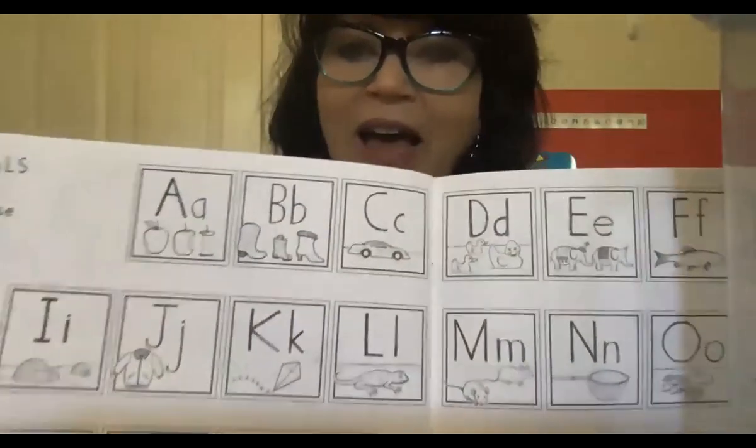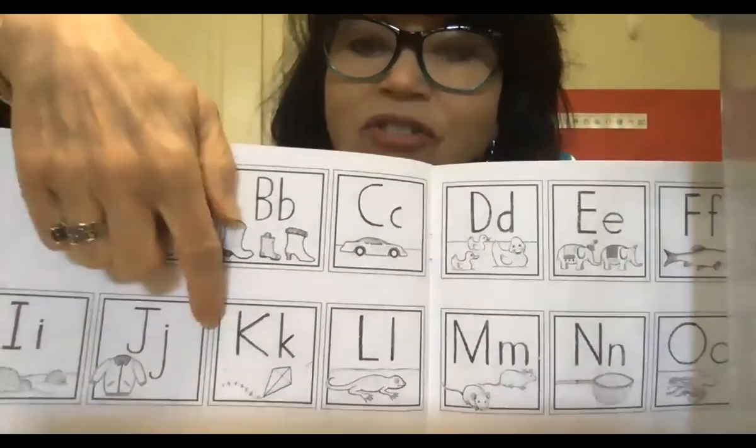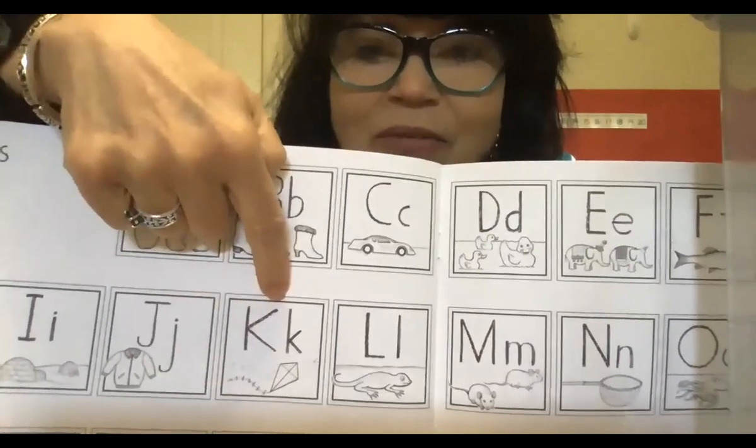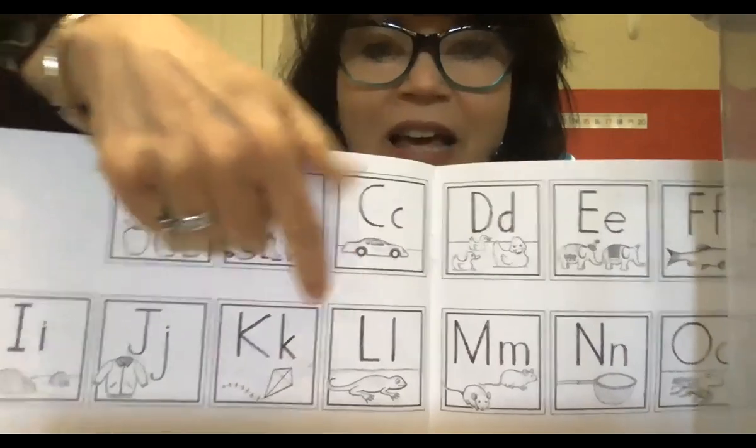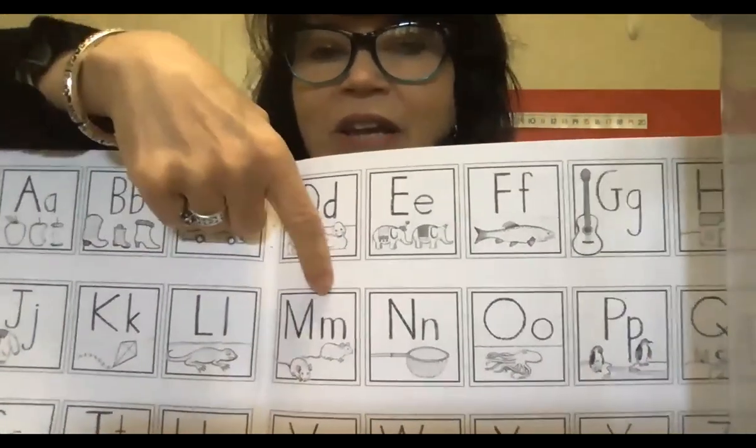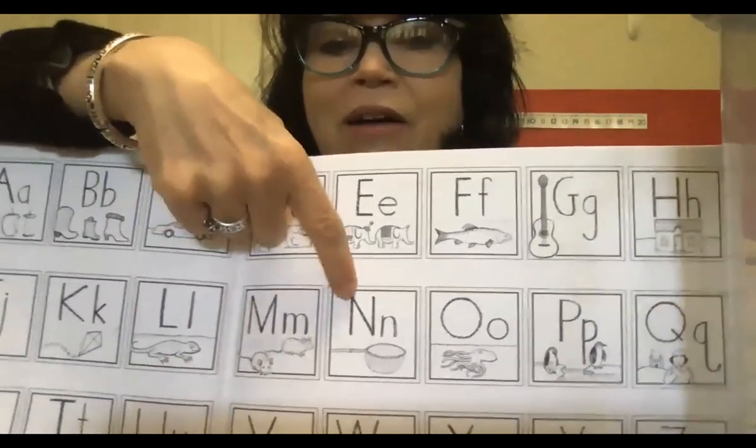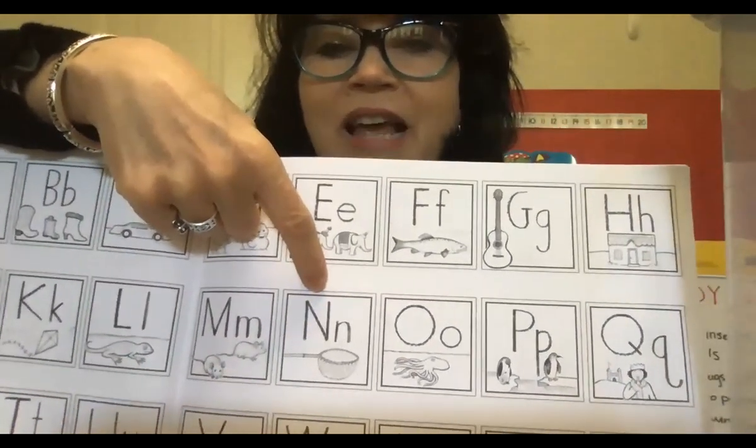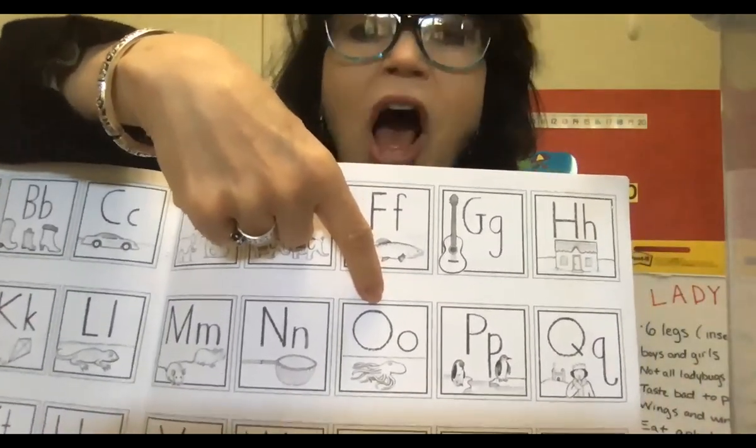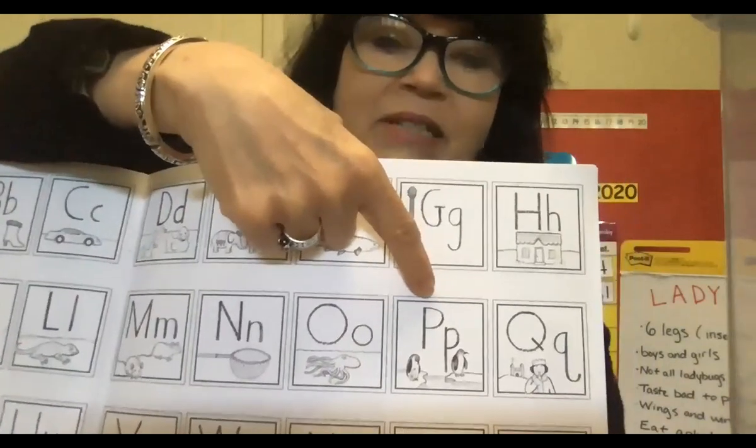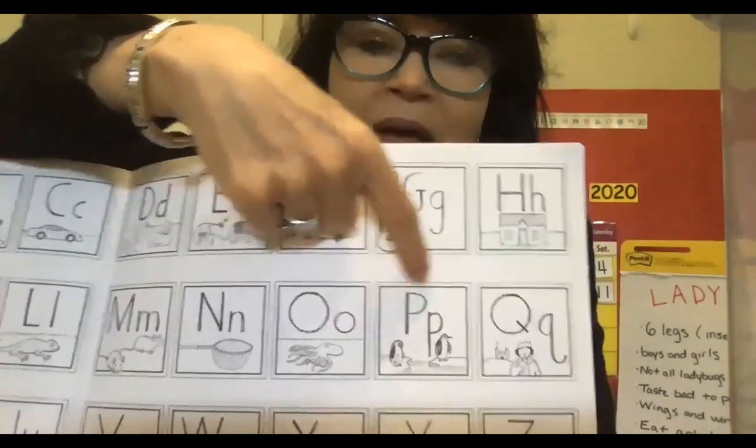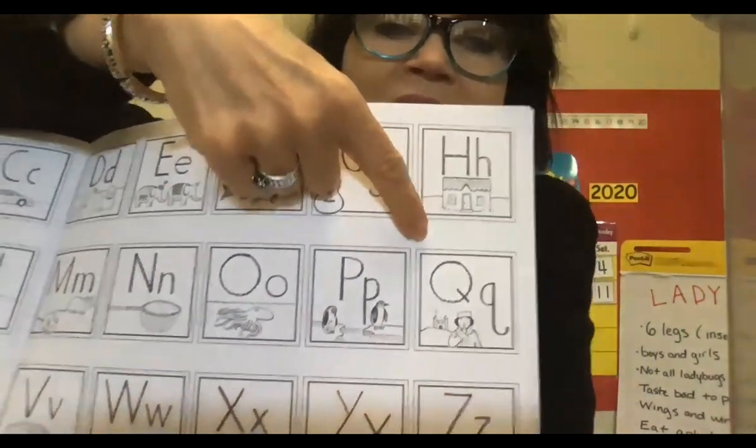Okay, say them with me. I says I as in igloo. J says J as in jacket, that's right. What does K say? K as in kite. What does L say? Lizard. M says M as in mouse. N says N as in net. O says O as in octopus, that's right. P says P as in penguin, that's right.